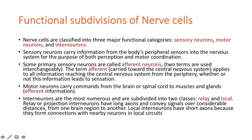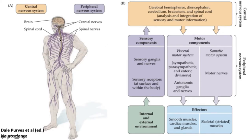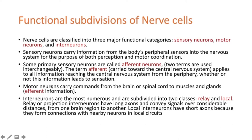Sometimes we also call sensory neurons the afferent neurons. Afferent means something which is carrying signals towards the central nervous system, and it applies to all information reaching the CNS from the periphery, whether or not this information leads to sensation. The other type — from the brain to the muscles — are the motor neurons, also called efferent neurons. Afferent means going inward and efferent is coming back outward. They carry commands from either the brain or the spinal cord back through the efferent nerves, which are the motor neurons.